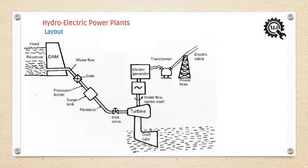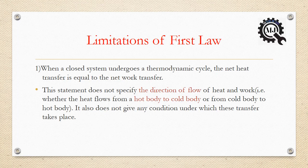So the energy conversions are: potential to kinetic, kinetic to mechanical, and mechanical to electrical. This is the first law of thermodynamics — the law of conservation of energy. Now, there are some limitations of this law. The first limitation is that this statement does not specify the direction of flow of heat and work — that is, whether heat flows from a hot body to a cold body or from a cold body to a hot body.